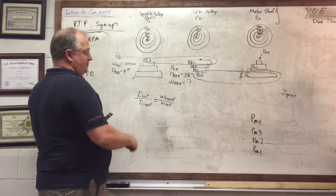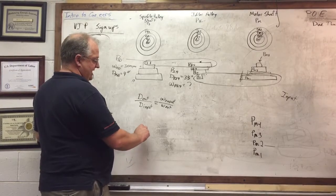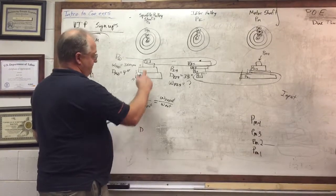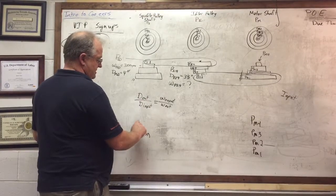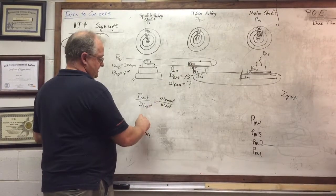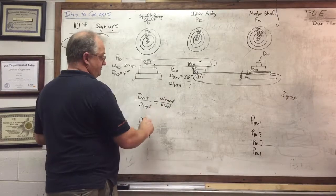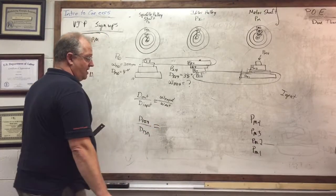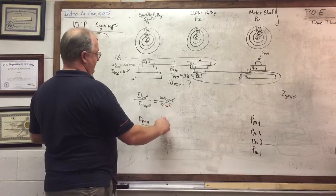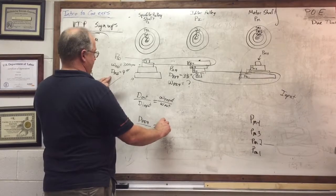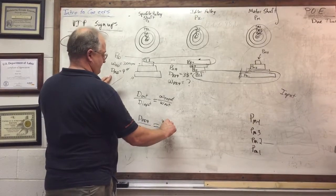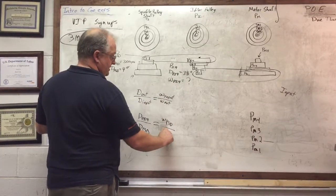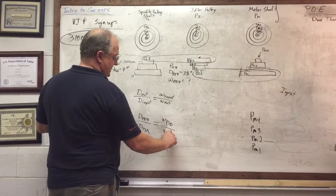Our d input here is actually the diameter of psd. The diameter of our output is the diameter of pi4. And that equals our angular velocity of psd, so this is wpsd, over the w of pi4.